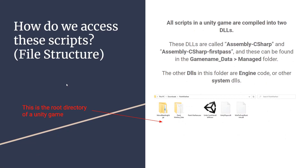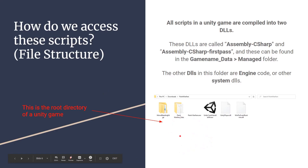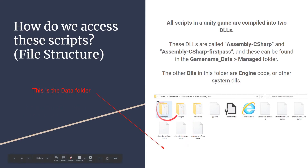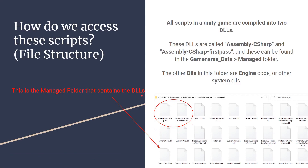So how do we access these scripts? We look at the file structure of the game. For example, in Paint Warfare, all the scripts are compiled into two DLLs called Assembly-CSharp and Assembly-CSharp-firstpass. These can be found in the root directory, then into the GameName_Data folder, then into the Managed folder. These DLLs contain all the source code for the game — the classes, the scripts, all that. The other DLLs in there are system or engine DLLs we don't need to touch.